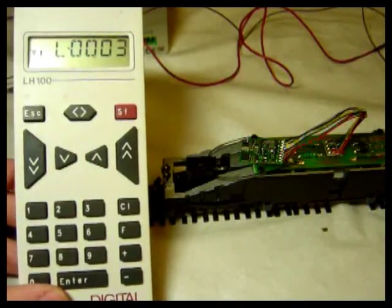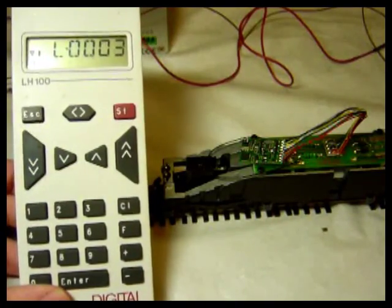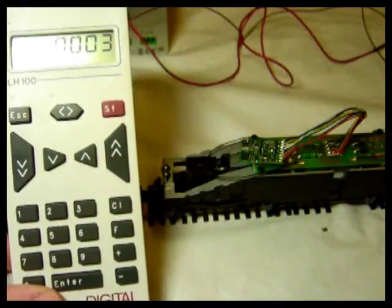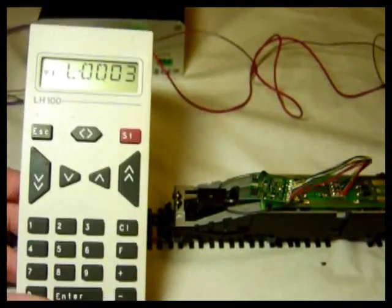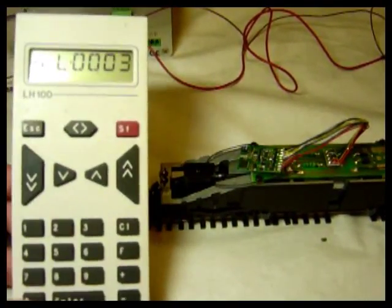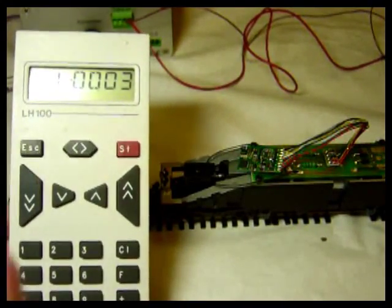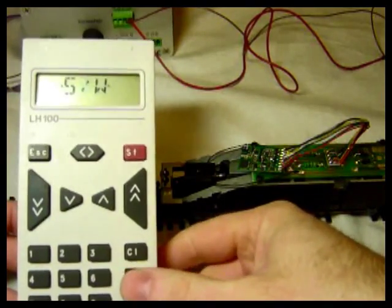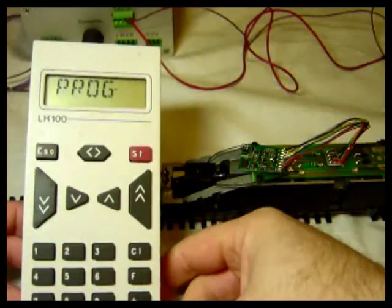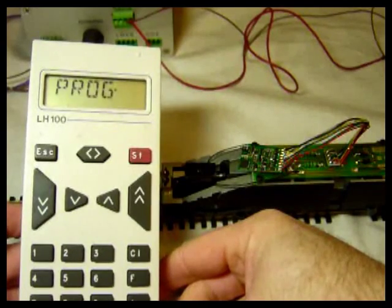I've now placed the loco on the programming track. It comes out of the PQ outputs of the Lenz LZV100 over there and I'm using the Lenz LH100 for programming. So we want to check the installation, so we'll press F until you get PROG UP for programming. Enter, enter again to confirm.